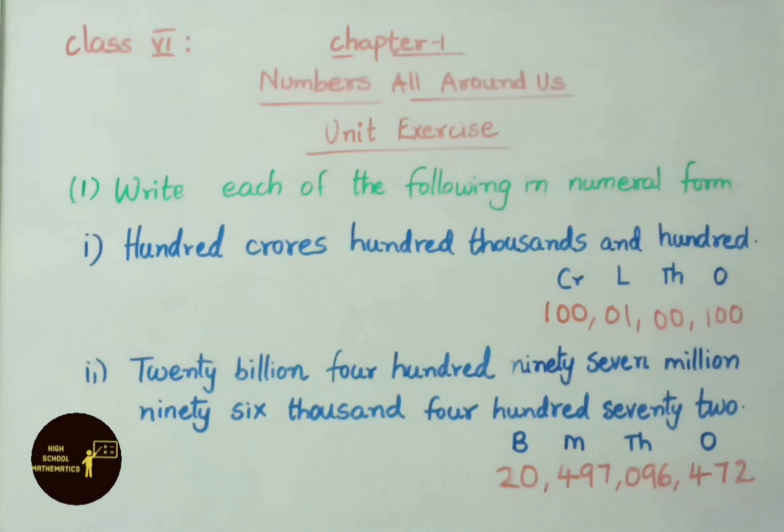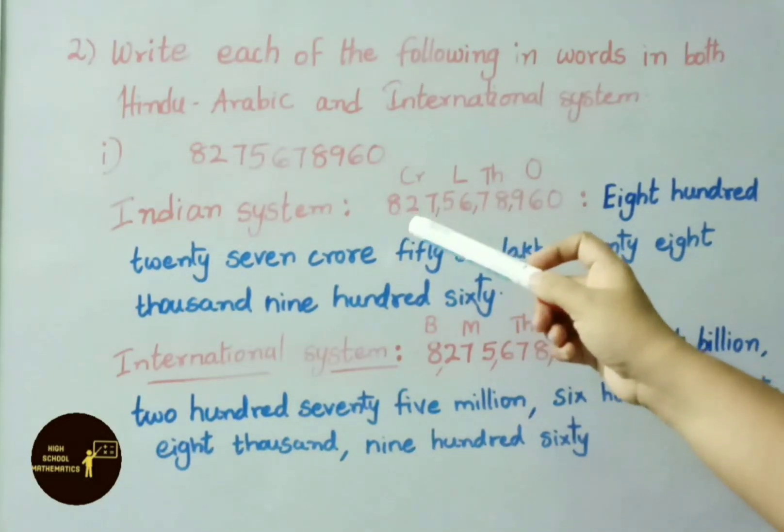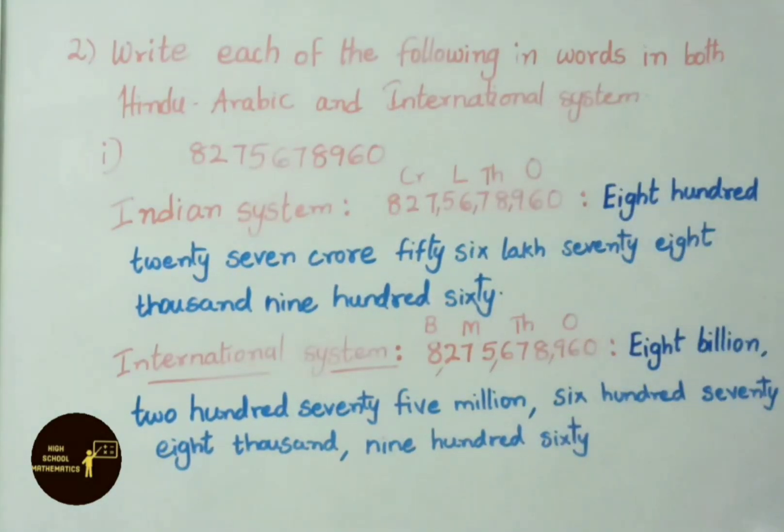Now let us see the second sum. Write each of the following in words in both Hindu-Arabic and international system. See the first one: 5,724,567,827. This is the number they have given. We shall write this in Indian and international system.